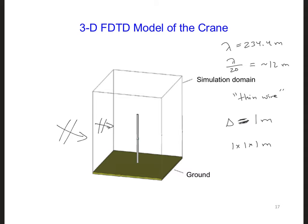So PML on five sides, just not on the bottom where we have the ground. And this PML will be used to absorb any scattering caused by the crane. And it doesn't make any sense to put a source inside of our PML.